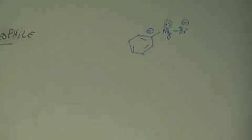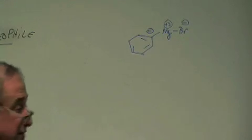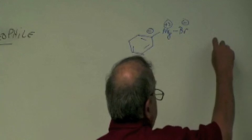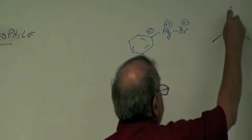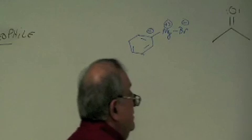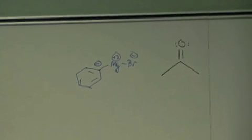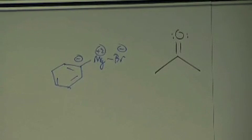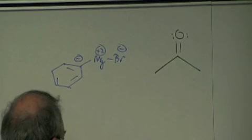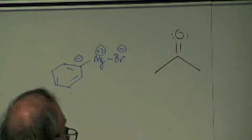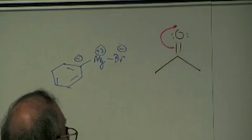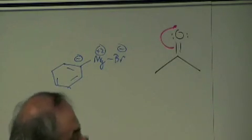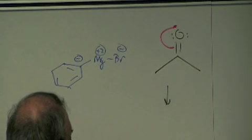For instance, just to pick something simple and stupid so that we can see how this works, something like propanone. Propanone has a real positive charge because that compound can go through resonance. When it goes through resonance, the pair of electrons in the double bond can relocate up to the top of the oxygen or in the empty orbital to give you this.